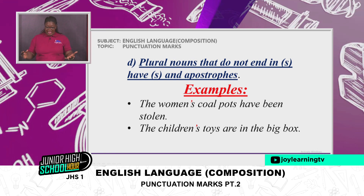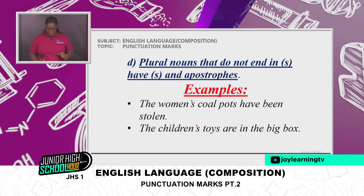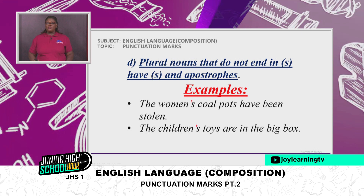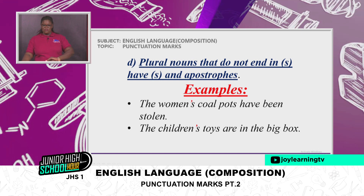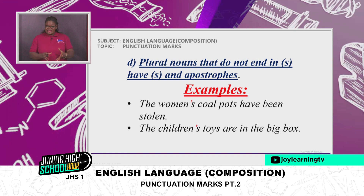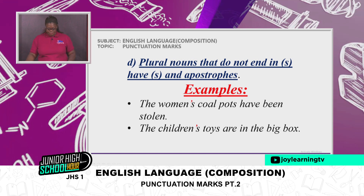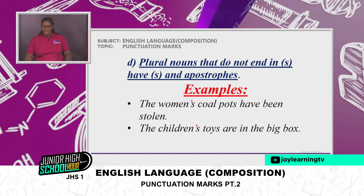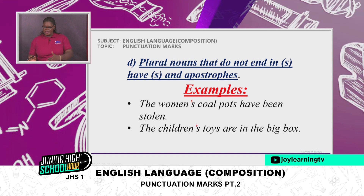Plural nouns that do not end in S have S and apostrophe. Examples: 'The women's coal pots have been stolen.' — 'women' is the plural of 'woman' and does not end in S, so it takes apostrophe S. 'The children's toys are in the big box.' — 'children' is plural but doesn't end in S, so it also takes apostrophe S.